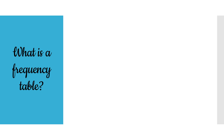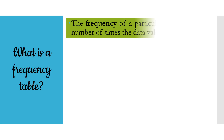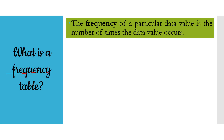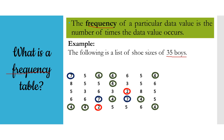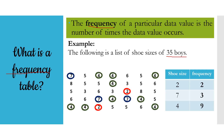First, we have a question: what is a frequency table? Let us first define the word frequency. The frequency of a particular data value is the number of times the data value occurs. For example, the following is a list of shoe sizes of 35 boys. As you can see in the list, those boys who have a shoe size of two are only two. It means that only two boys have a shoe size of two — so that is the frequency of shoe size two.